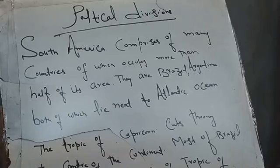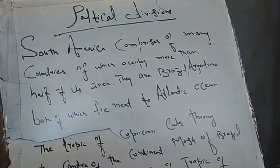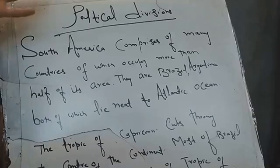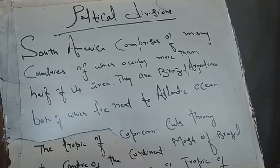Political division means this continent, which is a large landmass, has different countries with political boundaries drawn on it. This is a big landmass, and on this landmass the countries have decided their boundaries. Every country has an international boundary, and we call these political boundaries. So which countries are located here? South America comprises many countries.